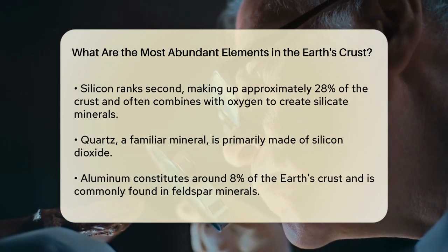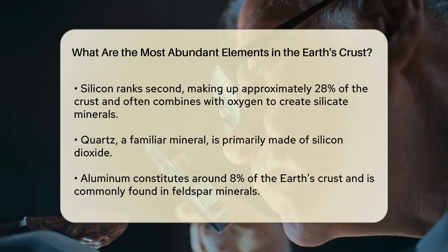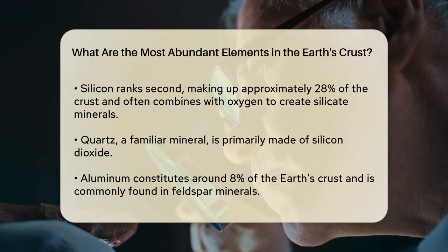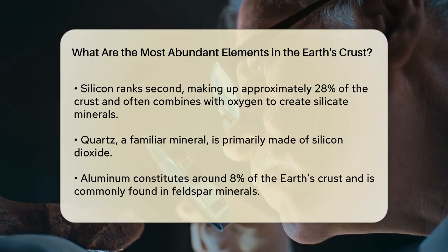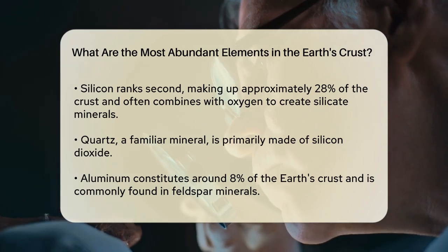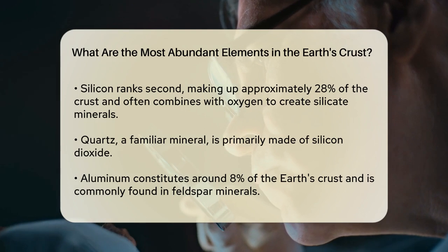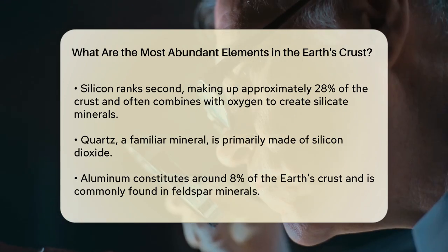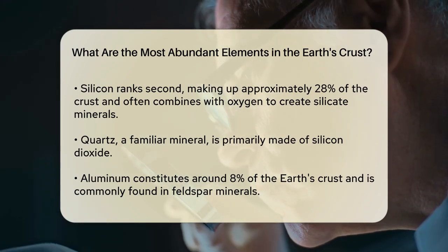Aluminum is another key player, making up around 8% of the Earth's crust. It's often found in minerals like feldspar, which is one of the most common minerals in the continental crust.